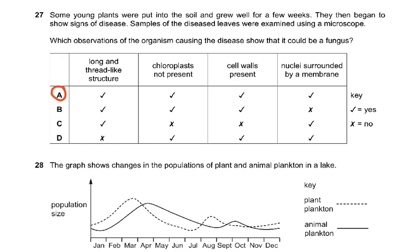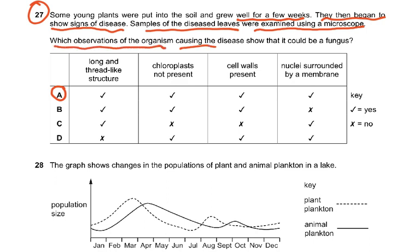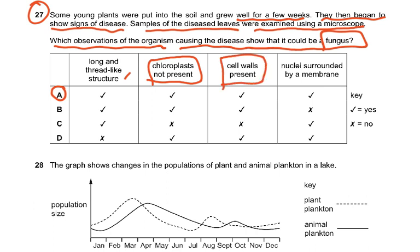Coming on to question 27: some young plants were put into the soil and grew well for a few weeks, then began to show signs of disease. Samples of diseased leaves were examined using a microscope. Which observations show the organism causing disease could be a fungus? Long thread-like structures — yes, those are called hyphae. Chloroplasts not present — yes, fungus has no chloroplasts. Cell walls are present — yes, made of a nitrogenous polysaccharide called chitin, spelled C-H-I-T-I-N.